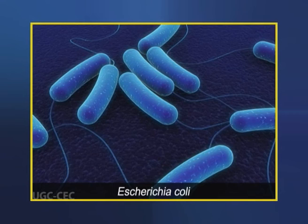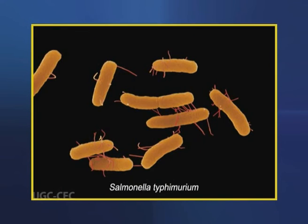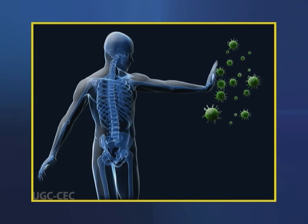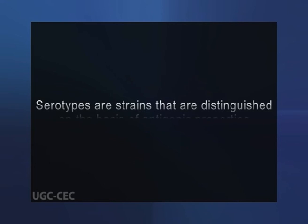Lipopolysaccharides are the dominant surface features of the outer membrane of gram-negative bacteria such as E. coli and Salmonella typhimurium. These molecules are prime targets of the antibodies produced by the vertebrate immune system in response to bacterial infection, and are therefore important determinants of the serotype of bacterial strains. Serotypes are strains that are distinguished on the basis of antigenic properties.